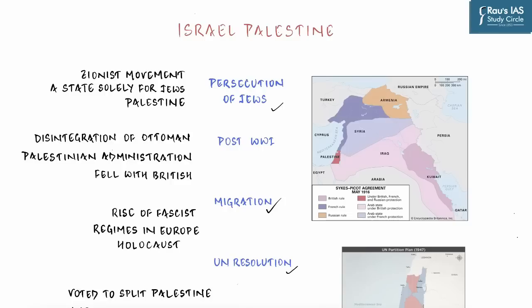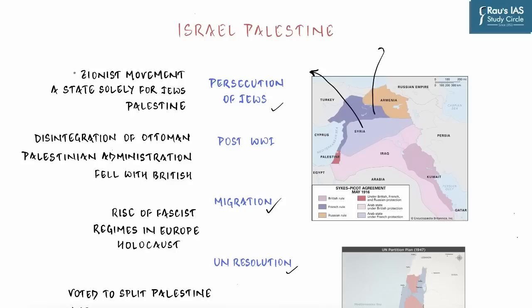The current map of Israel and Palestine did not exist 100 years ago. Back then, very few Jews lived in Jerusalem and surrounding areas — most had migrated to various European cities. Wherever Jews went, they faced extreme persecution from both Muslims and Christians. A movement emerged among Jews in European countries to address this persecution and actively advocate for the creation of a state solely for Jews. This movement came to be known as the Zionist movement.